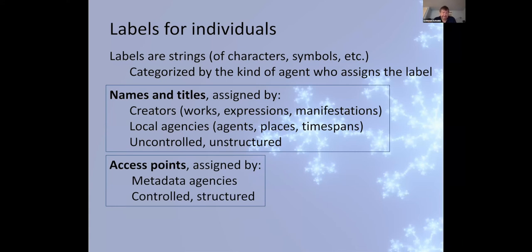Access points, on the other hand, are controlled and structured labels. They are assigned exclusively by metadata agencies, by cataloguers, by authority files, etc. And they are an attempt to provide control and structure to labels so that, for example, they can be collocated in browsing lists and so that there's some form of consistency, completeness and hopefully clarity between different access points within the same system.